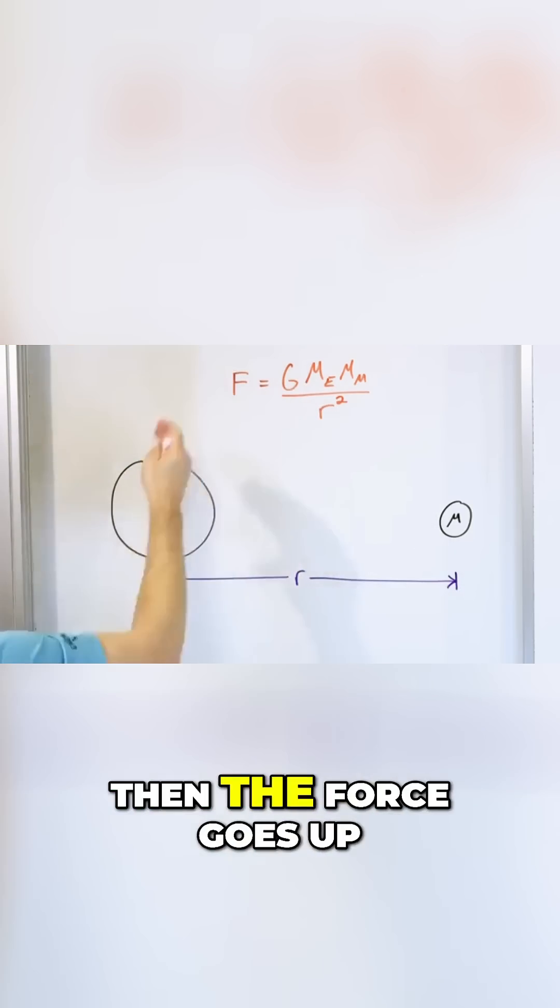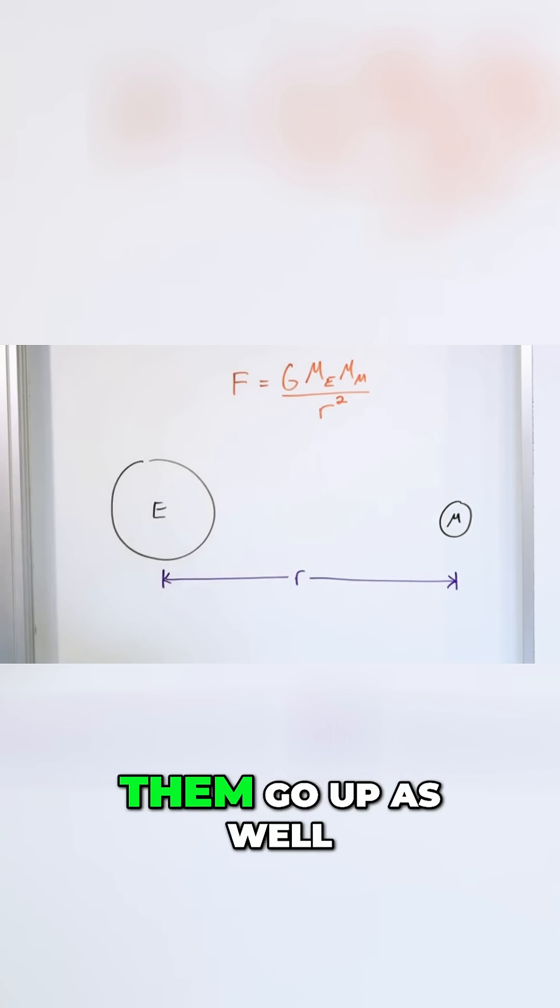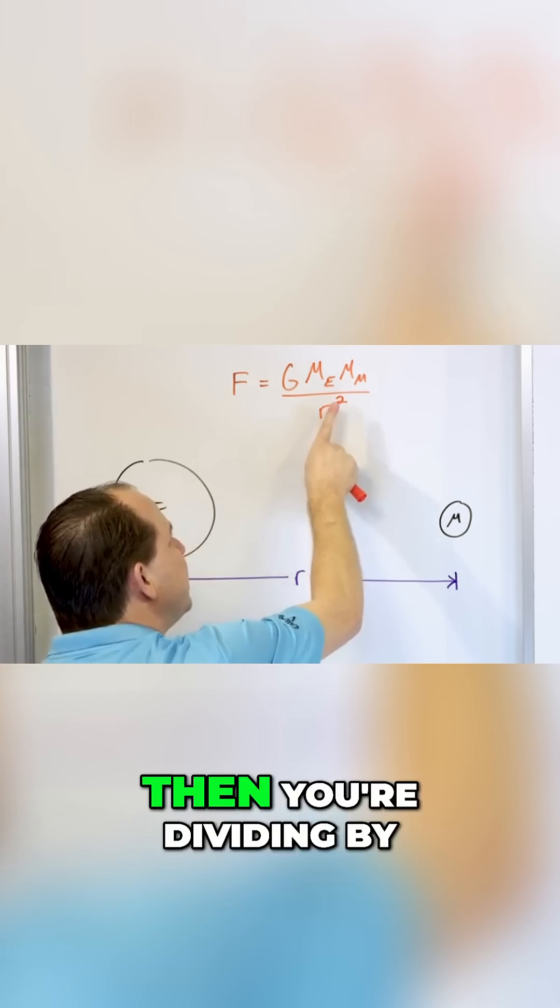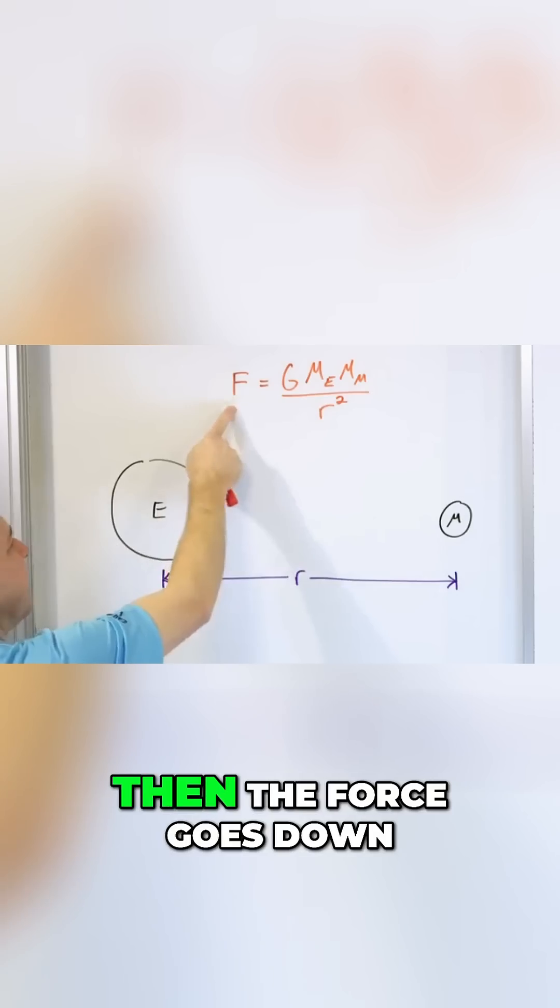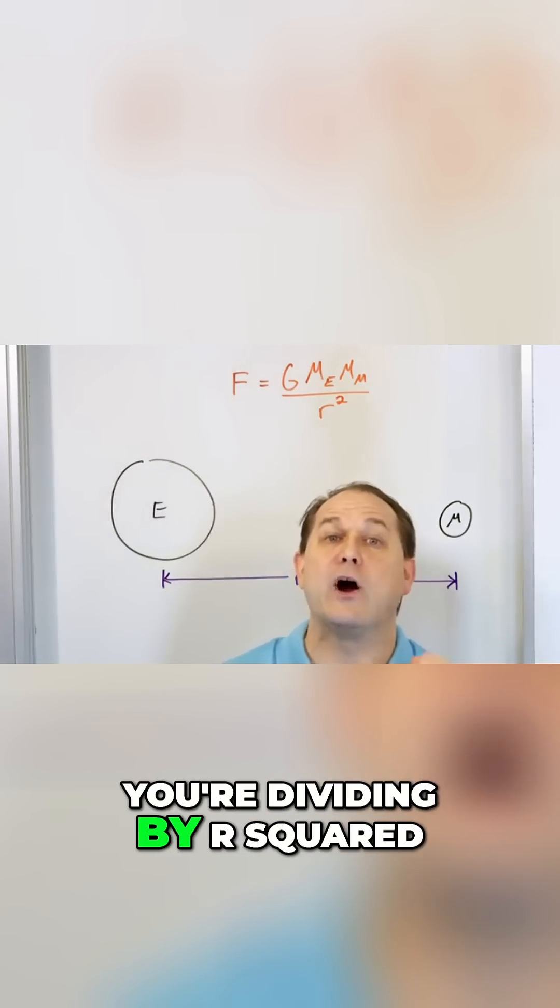If you make the mass of the Earth bigger, then the force goes up. If you make the mass of the Moon bigger, then the force between them goes up as well. If you make the distance between them bigger, then you're dividing by a bigger number and the force goes down. However, you're not dividing by R, you're dividing by R squared.